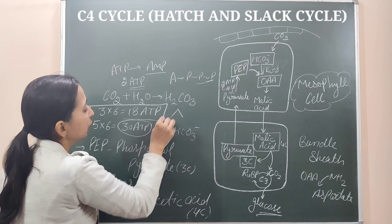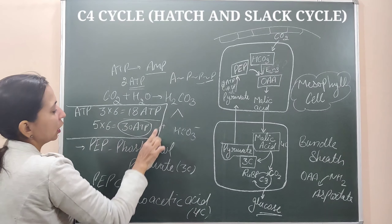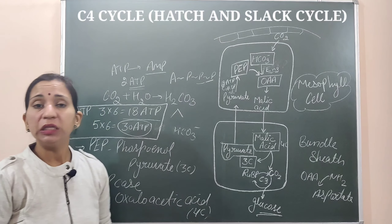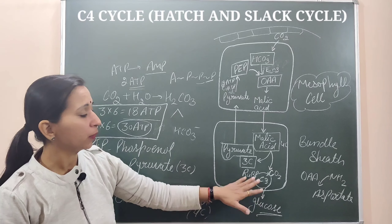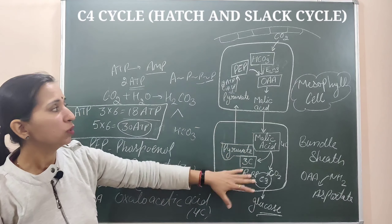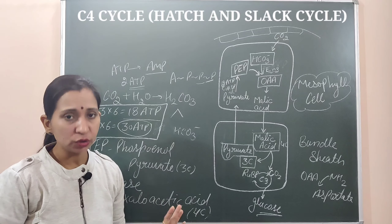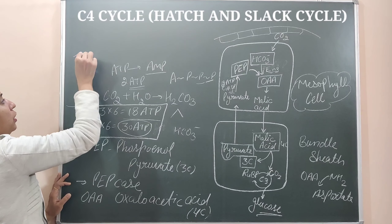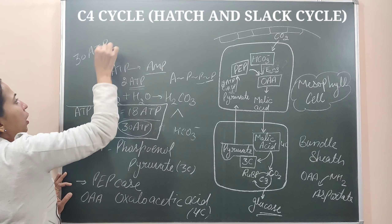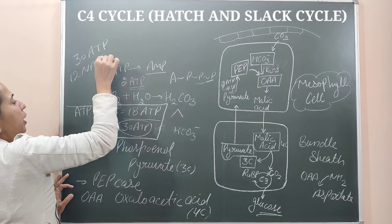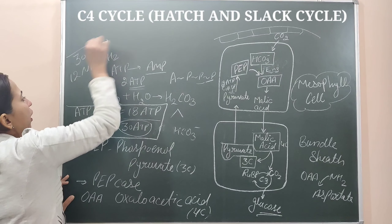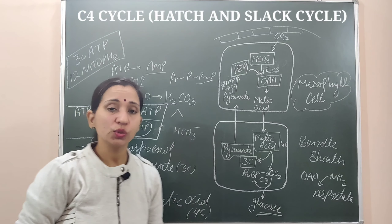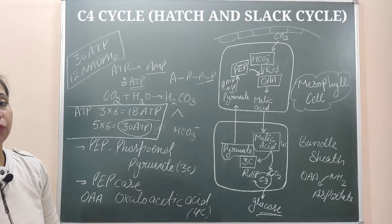So in the C4 cycle, 30 ATPs and 12 NADPH2 are utilized to fix carbon dioxide and make one glucose molecule. The NADPH2 requirement (12) remains the same as in the C3 cycle. That concludes the C4 cycle.